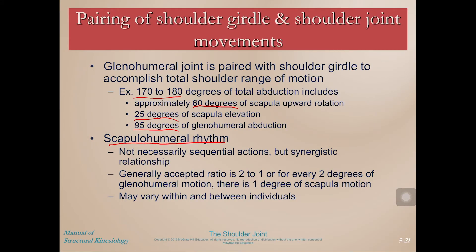If you have poor scapulohumeral rhythm, it means maybe your scapula is stuck, fixed, or not moving — due to weak musculature, tight musculature, pain, or something else. As practitioners within kinesiology, we look for whether full range of motion scapular movement accompanies full range of motion shoulder joint movement. Generally the ratio is two to one: for every two degrees of glenohumeral motion, there is one degree of scapular motion — though this can vary between individuals.